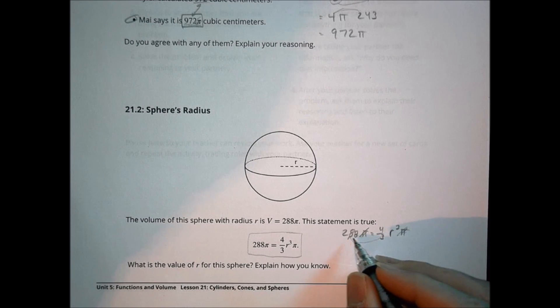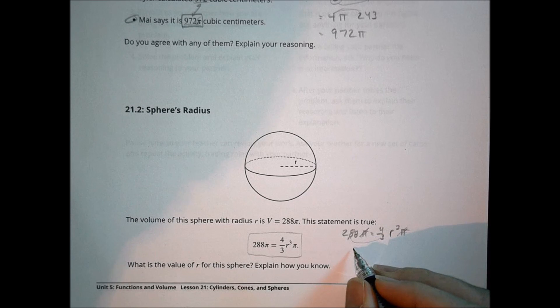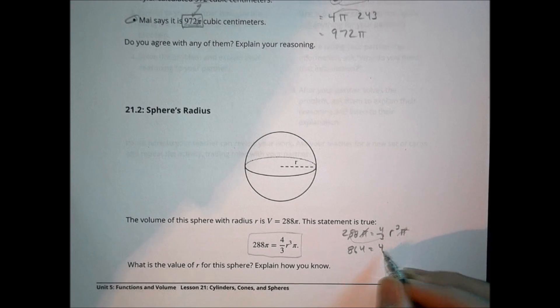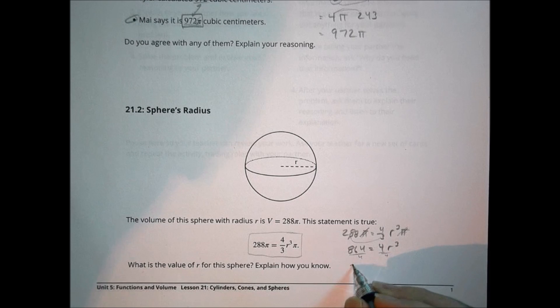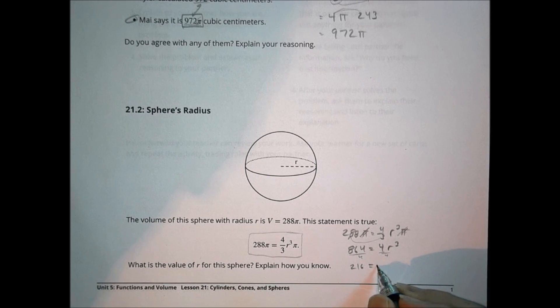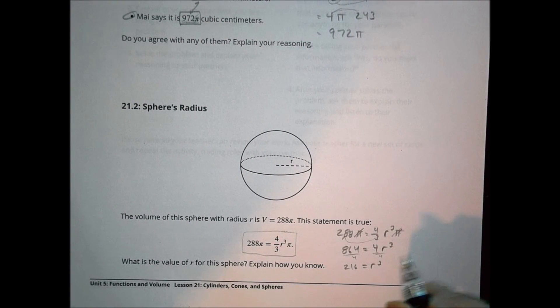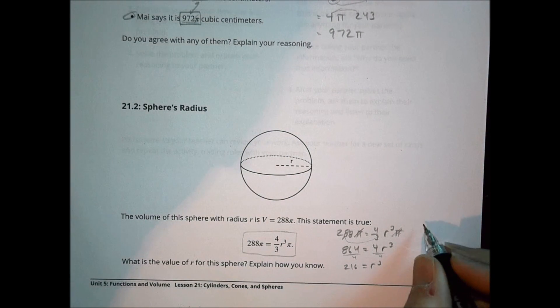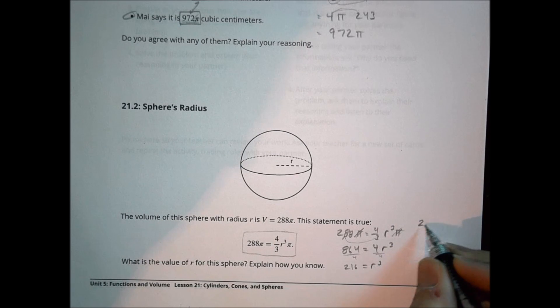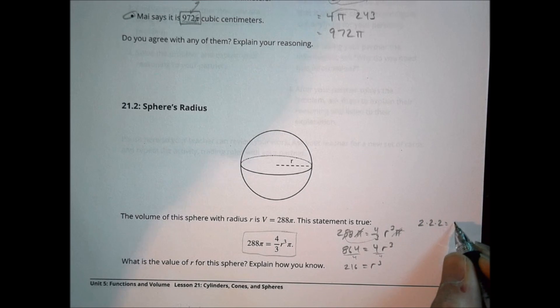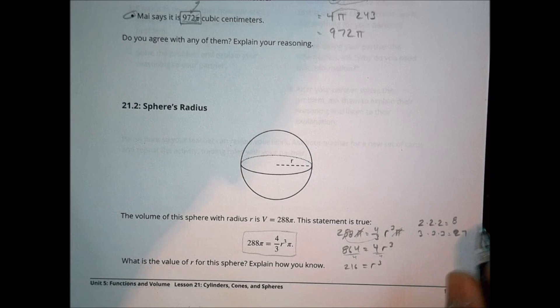Now I'm going to multiply this side by 3, first of all. So 288 times 3 is 864. That's going to equal 4 r to the third. Now I'm going to divide both sides by 4 to get rid of the 4. 864 divided by 4 is 216. That's going to equal r to the third. So I need to know a number that I multiply by itself and by itself again to get 216. So a couple of things to kind of keep in mind. If I did 2 times 2 times 2, I'd end up at 8, right?